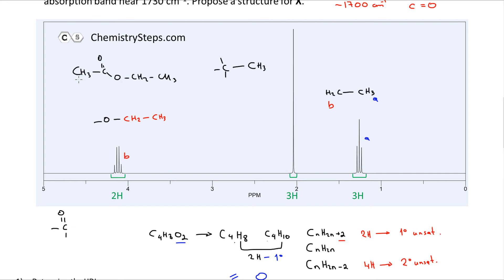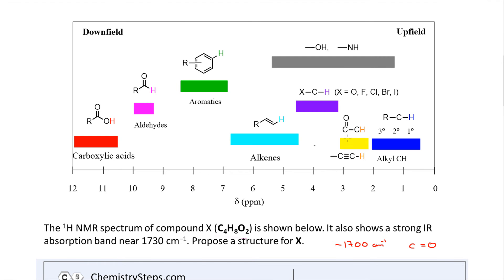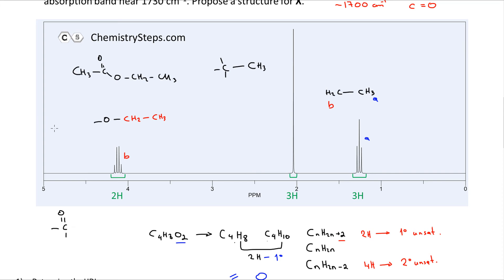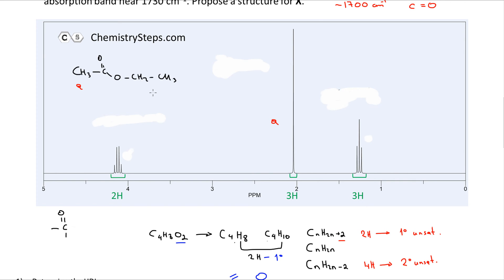The peak at about 2 ppm matches hydrogens next to a carbonyl, which typically appear from about 2 to 2.5 ppm. Let's label the peaks on our final structure: the CH3 next to the carbonyl is the singlet (protons A); the CH2 next to oxygen is the quartet (protons B), split by the three CH3 hydrogens; and the terminal CH3 of the ethyl group is the triplet (protons C), the most upfield signal. This matches our structure.